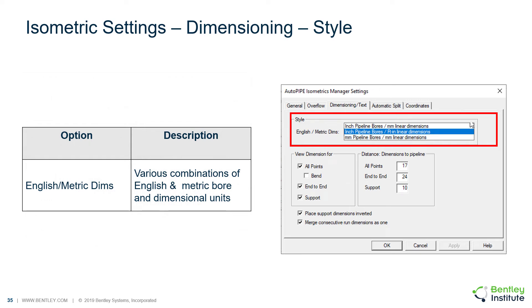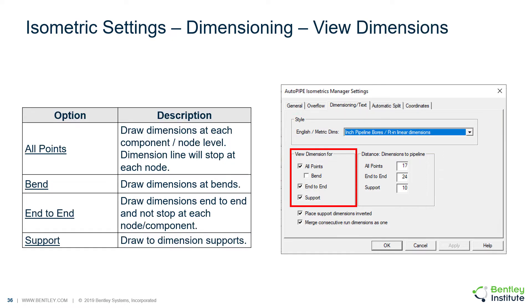On the dimensioning text tab, there are many options. Various combinations of English and metric, bore, and dimensional units are available under the style. You can pick and choose what dimensions are shown on your plot.